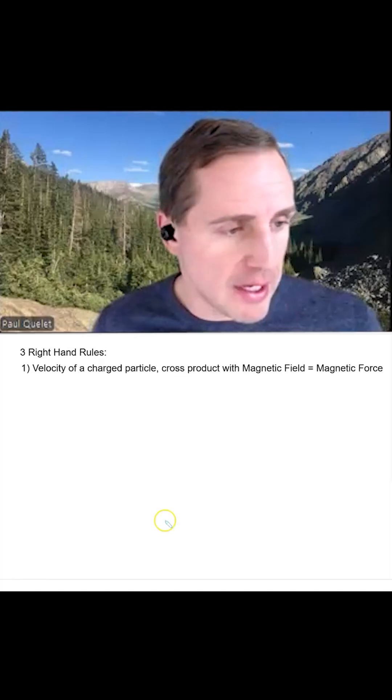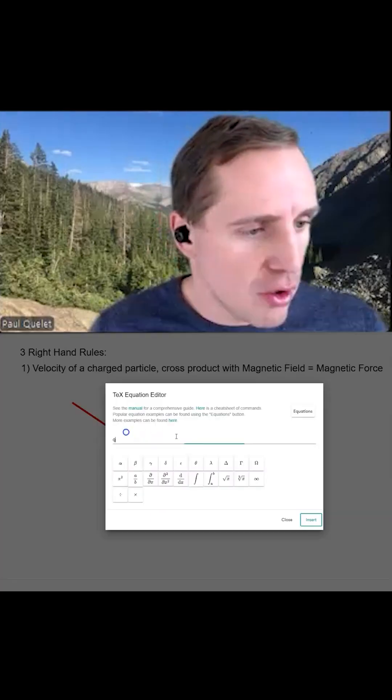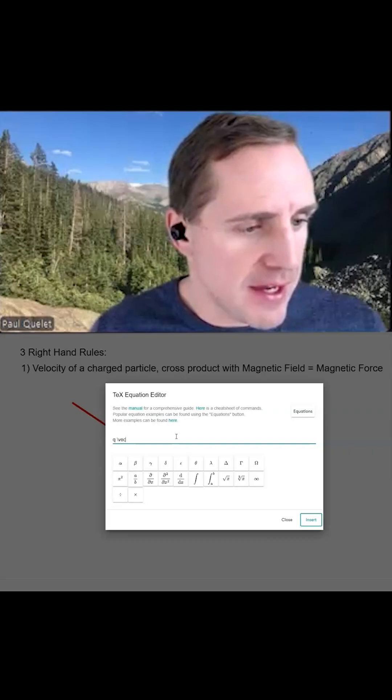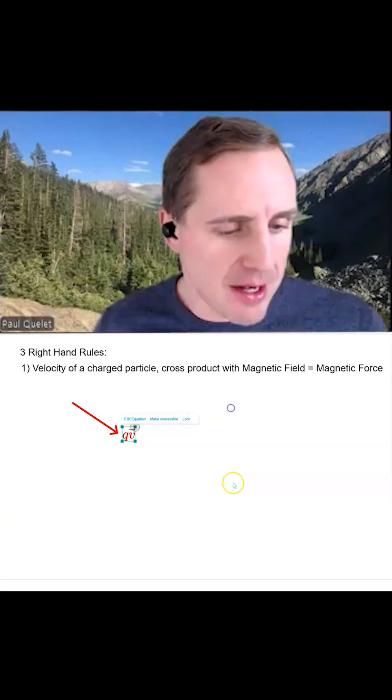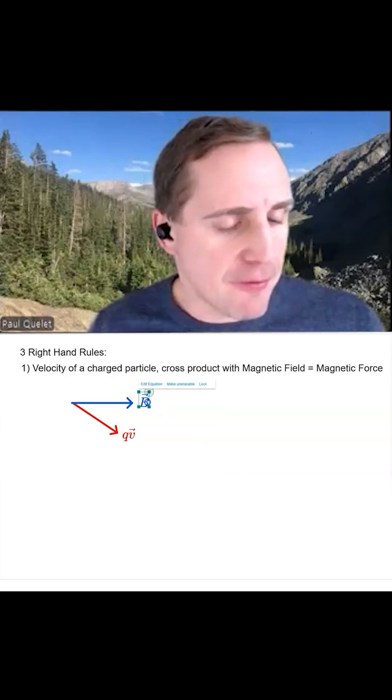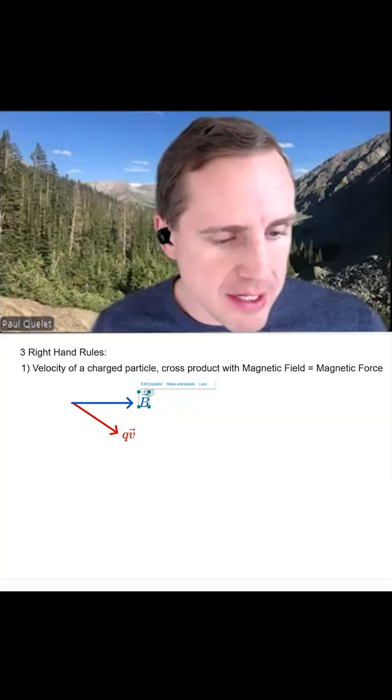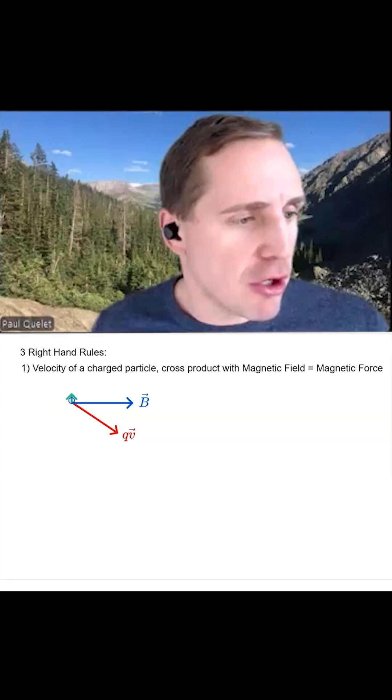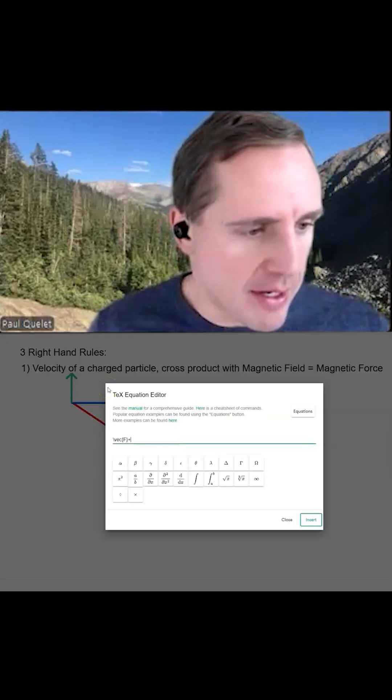So if you have a charged particle moving like this, and imagine that's q times v, v being the velocity. And imagine you have a magnetic field, then the magnetic force will be perpendicular to both of them. The direction will be given by the right hand rule, f subscript b.